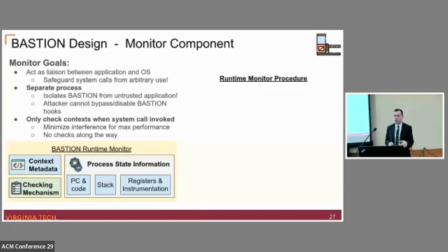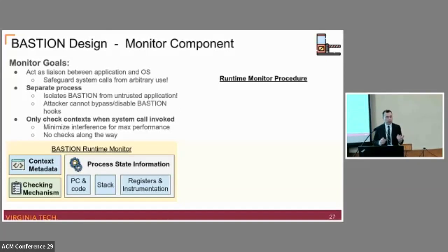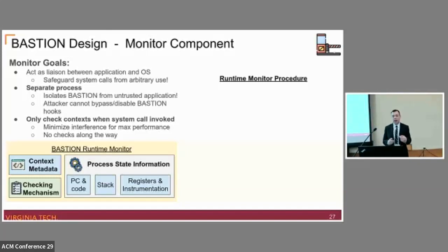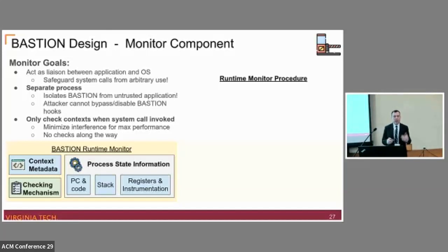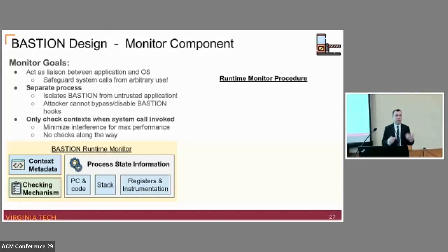On the monitor side, the monitor's goal is to act as a liaison between the application and the operating system to safeguard system calls from arbitrary use in the untrusted application. The monitor is designed as a separate process, which isolates Bastion from the untrusted application — meaning the attacker cannot bypass or disable the defense during dynamic context checking. The monitor only performs context checking when a system call is attempted; there are only updates of dynamic variables along the way, not checks.